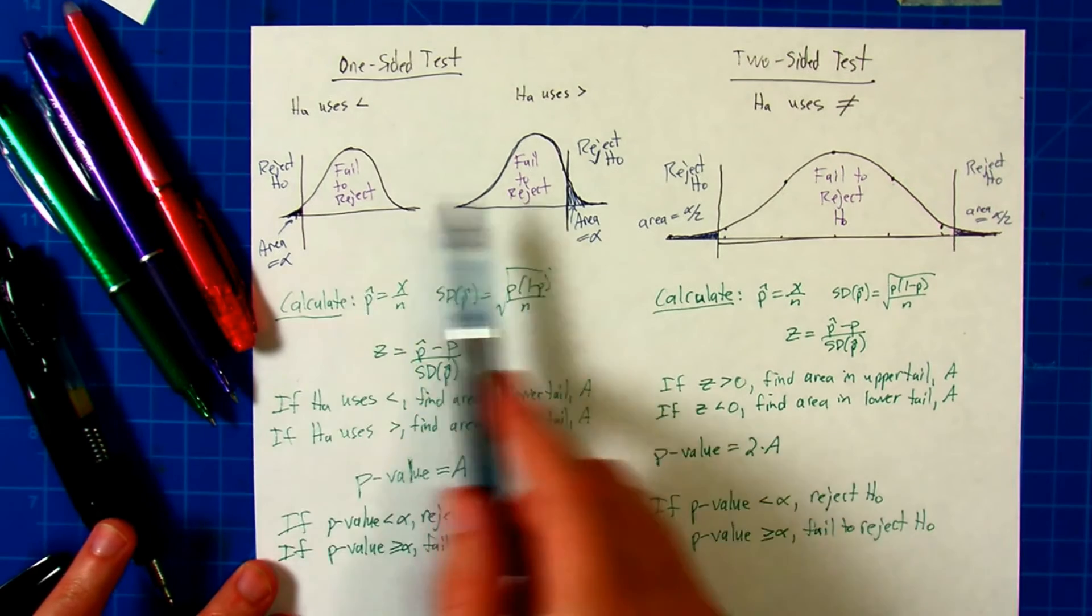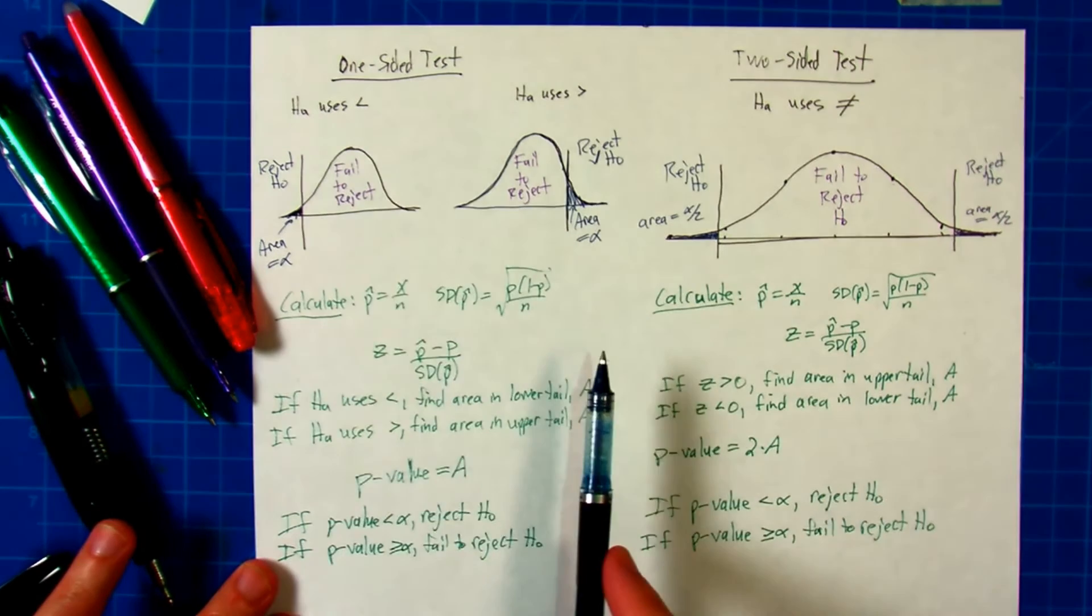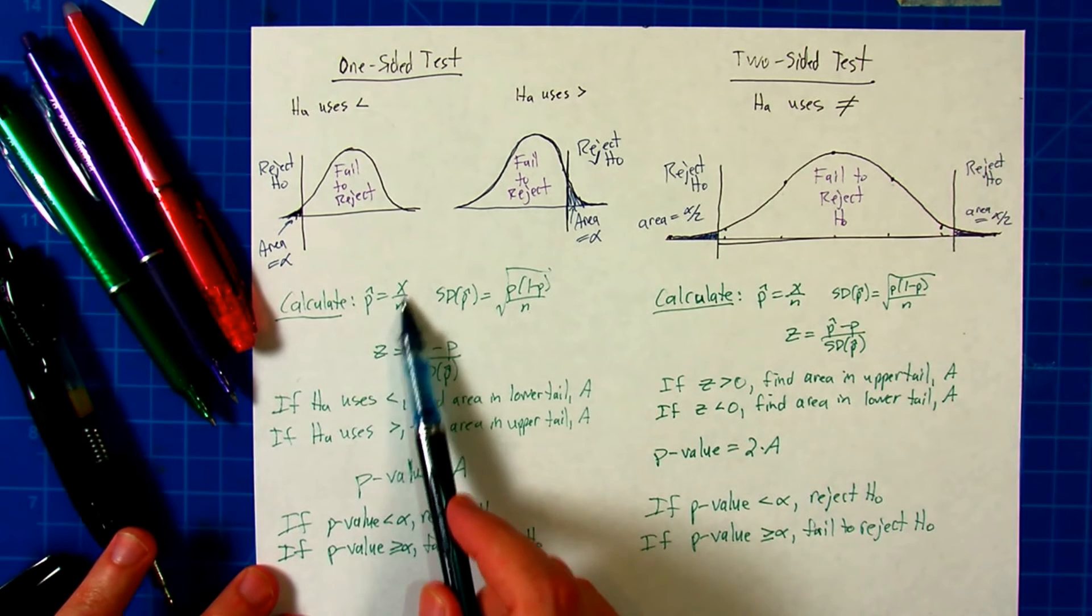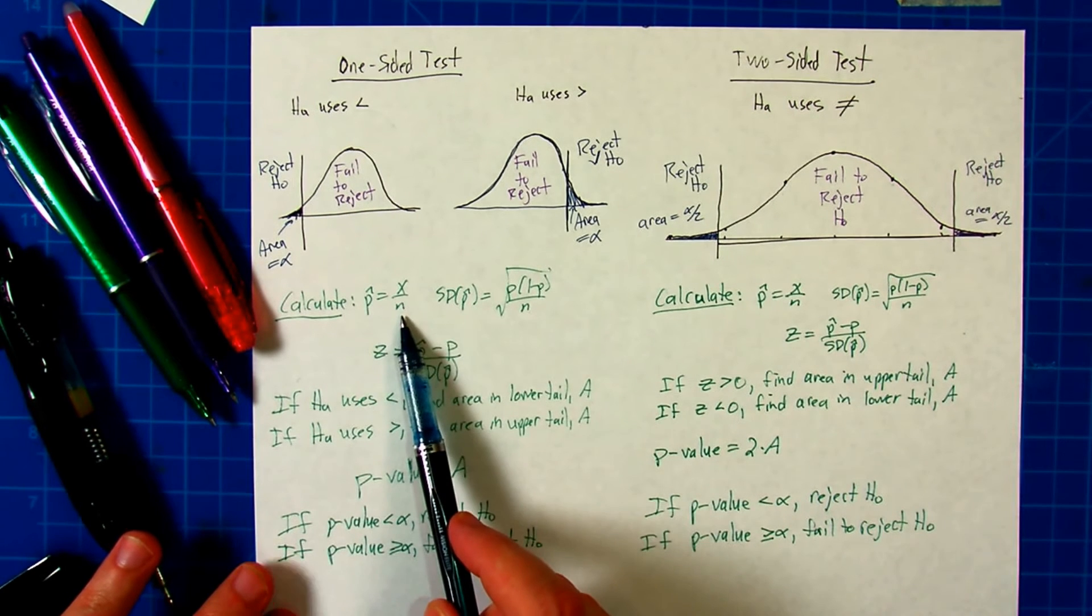If it's not in that part of the curve relative to that hypothesis, you fail to reject. The calculations proceed as p-hat equals capital X over N, number of successes over number of trials.